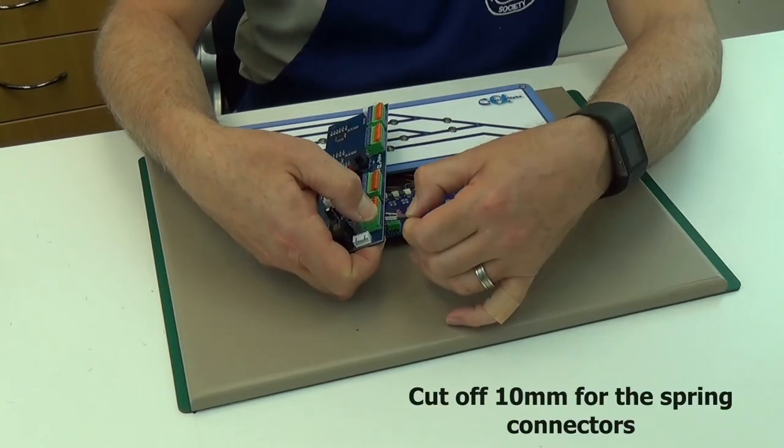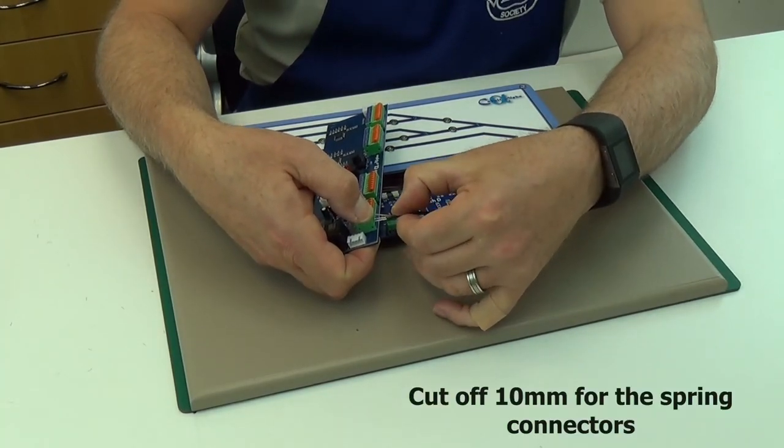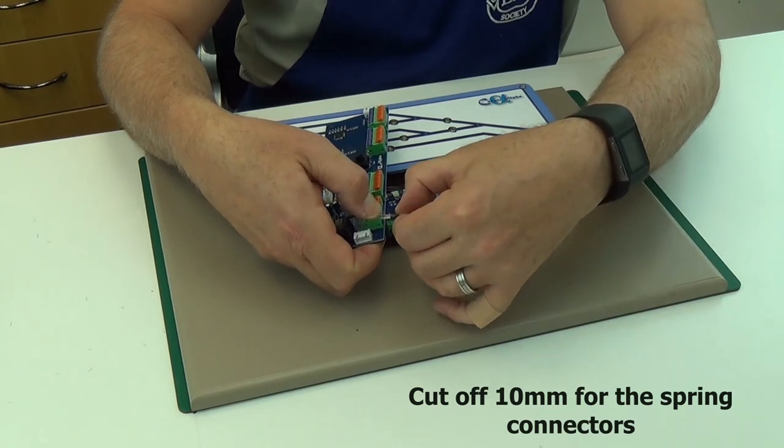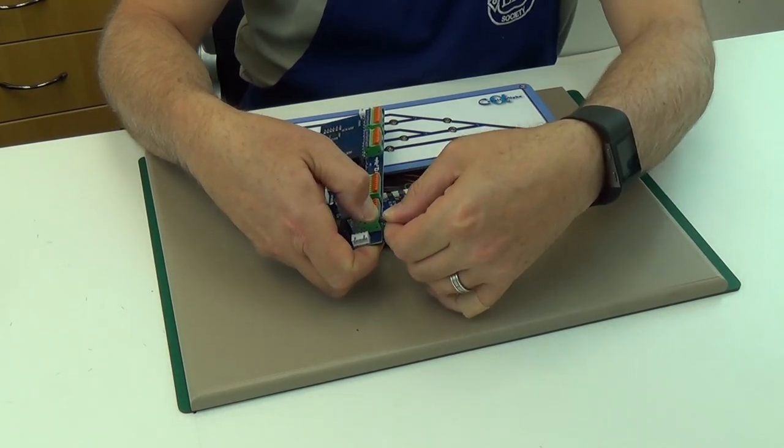On to the AEU, its spring connector needs 10mm of wire stripped away. Again, too much and it could short, too little and you might not make a contact.